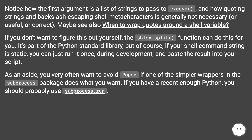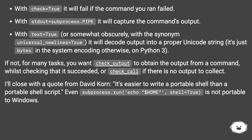shlex.split is part of the Python standard library. Of course, if your shell command string is static, you can just run it once during development and paste the result into your script. As an aside, you very often want to avoid popen if one of the simpler wrappers in the subprocess package does what you want. If you have a recent enough Python, you should probably use subprocess.run. With check equals true, it will fail if the command you ran failed. With stdout equals subprocess.PIPE, it will capture the command's output. With text equals true — or somewhat obscurely, with the synonym universal_newlines equals true — it will decode output into a proper Unicode string; it's just bytes in the system encoding otherwise, on Python 3. If not, for many tasks you want check_output to obtain the output from a command whilst checking that it succeeded, or check_call if there is no output to collect.